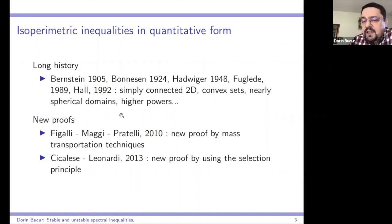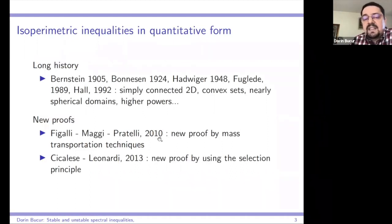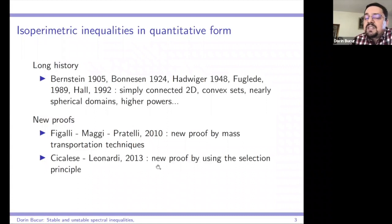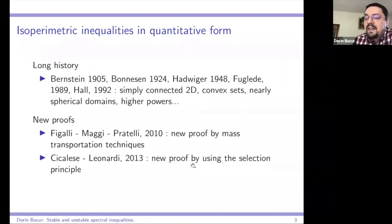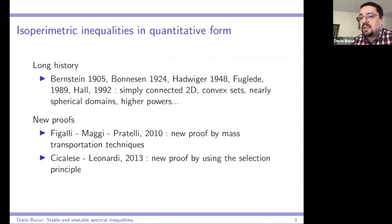Later there were two different proofs of the same inequality: one by Figalli, Maggi, and Pratelli using mass transportation techniques, and another by Cicalese and Leonardi using the selection principle — the idea that instead of proving the inequality for every set omega, it is enough to prove it for special sets satisfying certain properties.